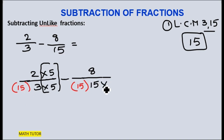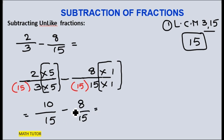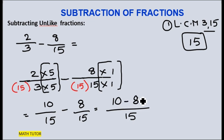For the second fraction, since I already have 15 as my LCM denominator, I need not multiply with any number — I am just keeping 1. Next, multiply: 2 fives are 10, so I get 10 by 15 minus 8 by 15. We have come to the same common denominator of 15. Simply subtract the numerators: 10 minus 8 is 2. So the answer is 2 by 15.